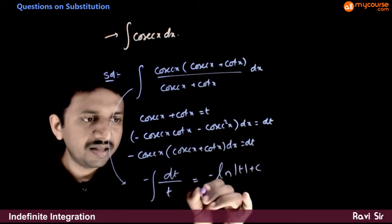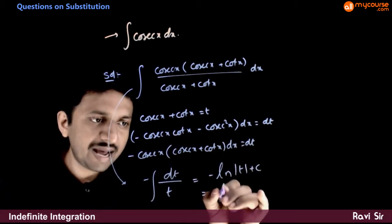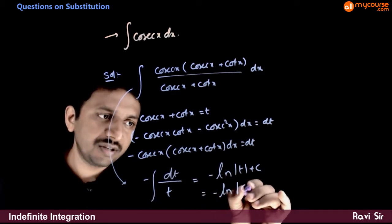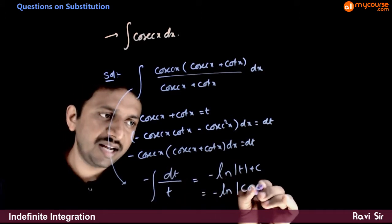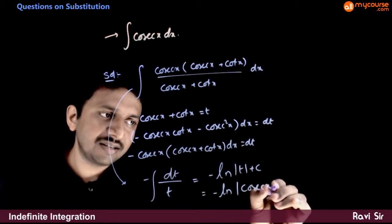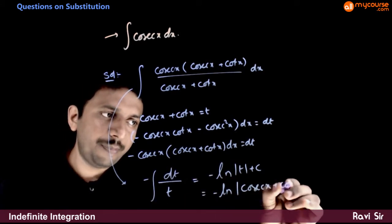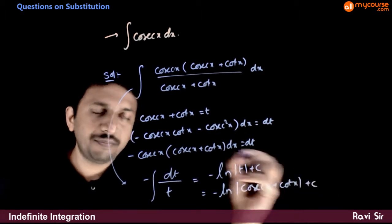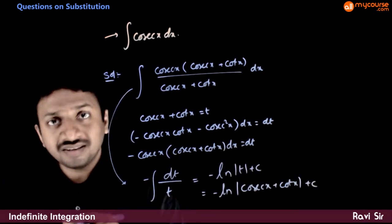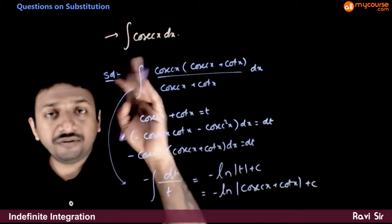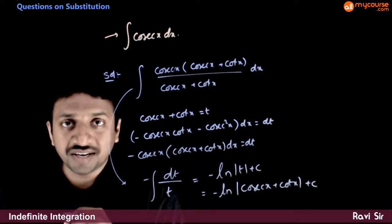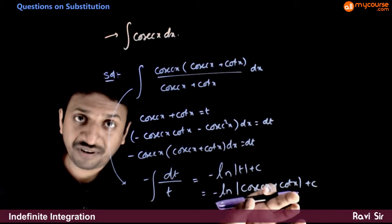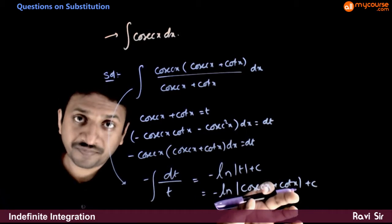That equals minus ln of |cosecant x plus cot x| plus c, which is the integration of cosecant x. You can further simplify this if you want.